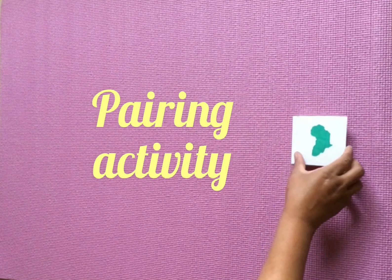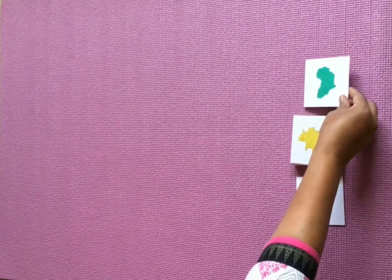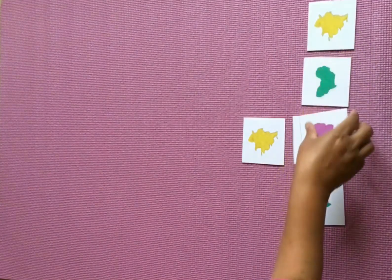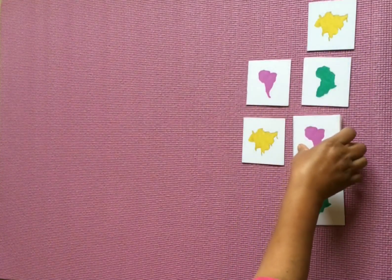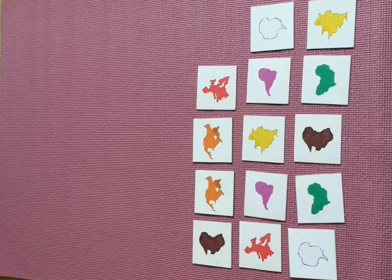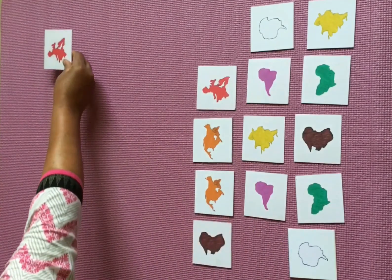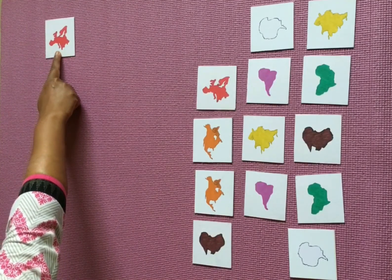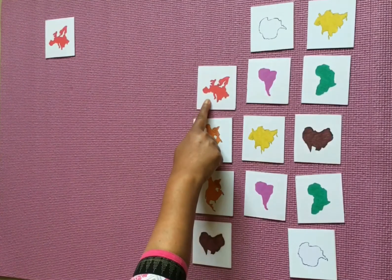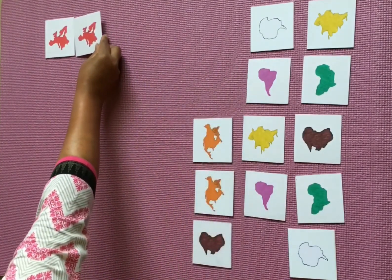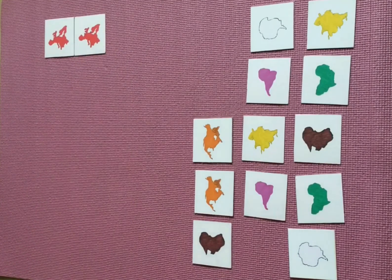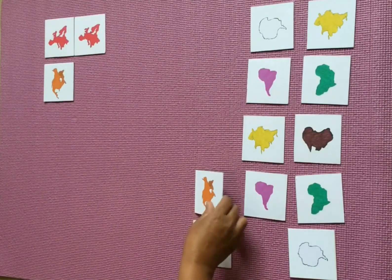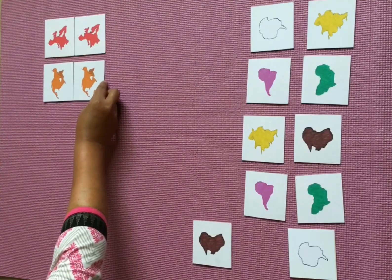We can also offer a pairing continents activity. A pair of each continent is pasted on cards. Take the cards one by one and place them on the mat. Isolate any one of the continents and ask the child to find the same among these. The child finds it and we ask them to keep it next to the isolated one. The activity continues until the child pairs all the continents.